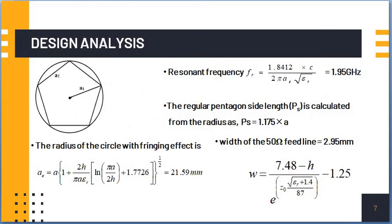This is the design analysis. As I said, the pentagon shape is derived from the circular patch. Miniaturization of the antenna has taken place. And the fringing radius is being calculated using the equation AE equals A times 1 plus 2H by pi A times ln pi A by 2H plus 1.7726 to the power of 1 by 2.